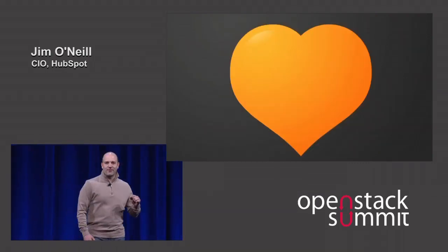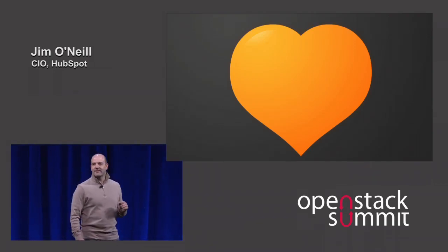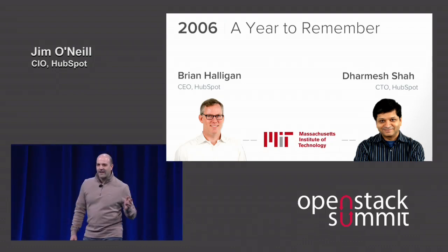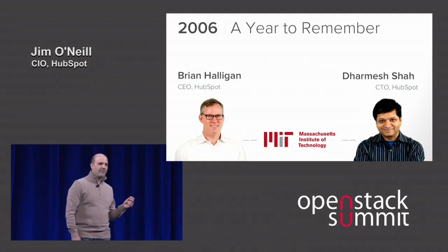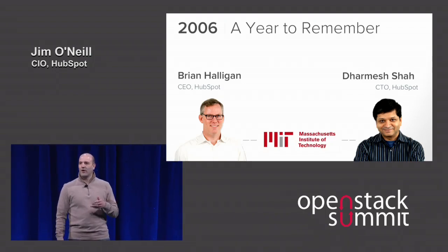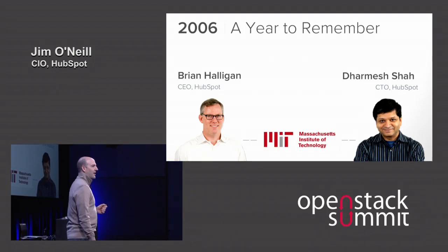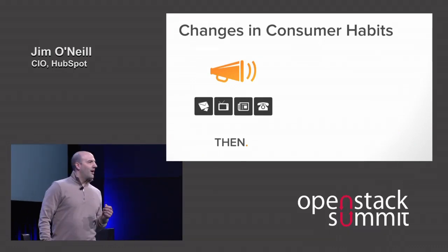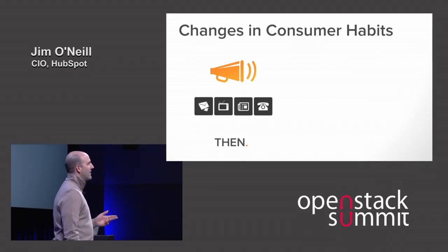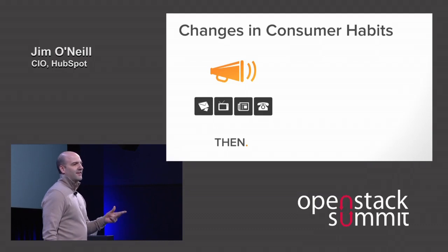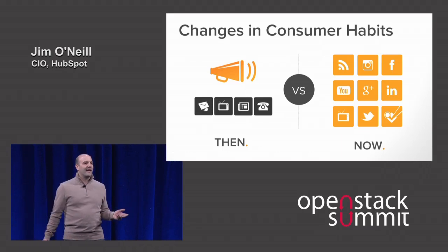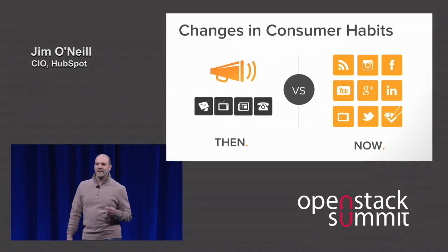With any good love story, it began with a meeting of chance. In 2006, two gentlemen — Brian Halligan and Dharmesh Shah, co-founders — were both serial entrepreneurs studying their MBAs at MIT. They were realizing the way we all learn, shop, and buy online was fundamentally changing. These changes in consumer habits were driving us from cold calling, email, direct mail, and interruption-based marketing to what we all use and love today: social media, blogging, and search engines.